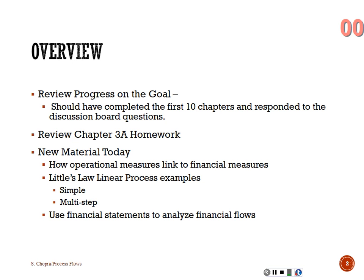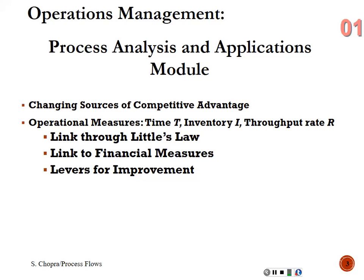Today we're going to start with a linear process — something very simple — and then move to a multi-step process. A linear process is one in which every flow unit goes through every step of the process. Those are relatively easy to solve for inventory, throughput, and flow time. Next time we'll work on nonlinear processes, where every flow unit doesn't go through every step. It's helpful to look at a problem and ask: is this linear or nonlinear? If it's linear, the solving process is relatively easy.